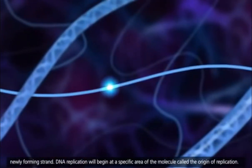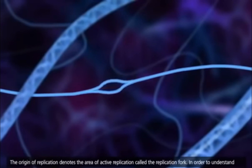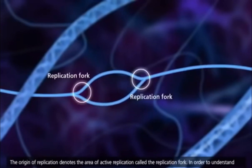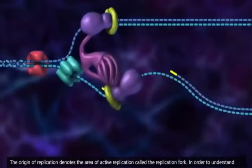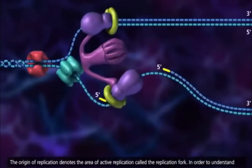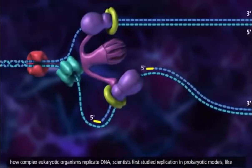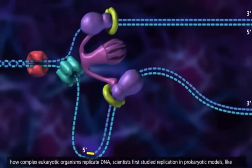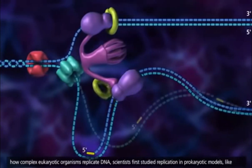These segments, called Okazaki fragments, are about 100–200 nucleotides long in eukaryotes and 1000–2000 nucleotides long in prokaryotes. Each Okazaki fragment is synthesized by DNA polymerase 3 in the 5' to 3' direction, beginning at the replication fork and moving away from it.